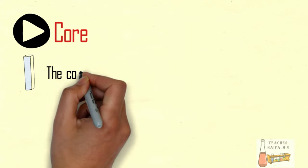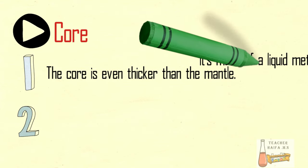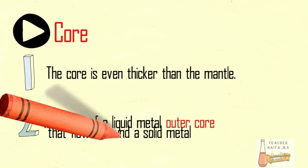Core. The core is even thicker than the mantle. It's made of a liquid metal outer core that flows around a solid metal inner core.